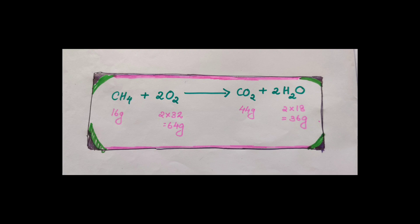We have a balanced chemical equation. Methane is completely burned in excess oxygen. What is the balanced equation? CH4 plus 2O2 gives CO2 plus 2H2O.